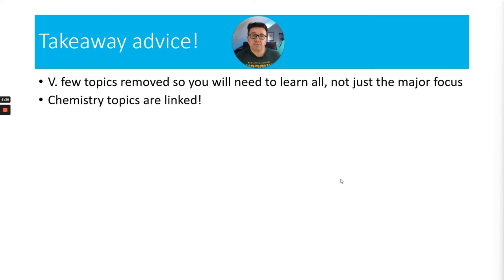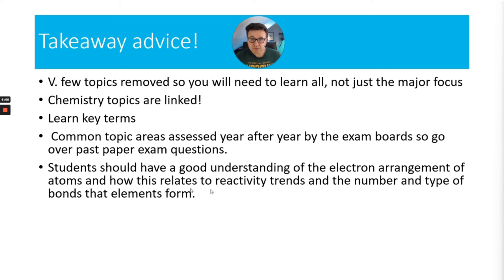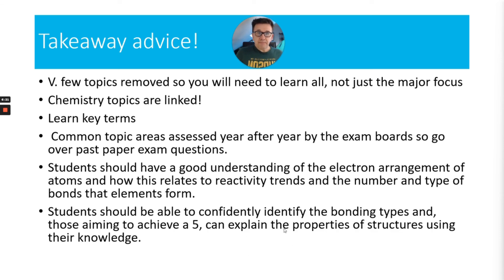Chemistry topics are linked, which is probably why they haven't removed much — everything connects. Learn key terms; I'd say that for all your science exams. Common topic areas are assessed year after year, so go over past paper exam questions. You should have a good understanding of the electron arrangement of atoms and how this relates to reactivity trends and the number and type of bonds elements form — even though it's not a major focus, it comes up repeatedly. You should be able to confidently identify the bonding types, and those aiming for a grade 5 should be able to explain the properties of structures using their knowledge.